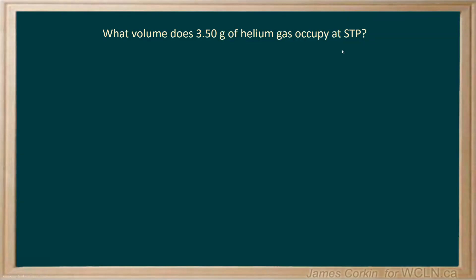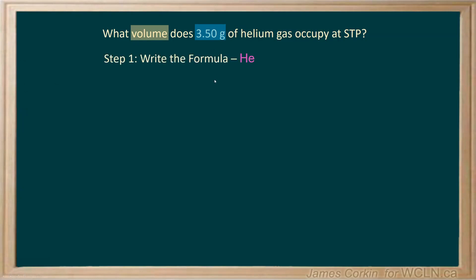In this example, we are asked what volume does 3.50 grams of helium gas occupy at STP, which is standard temperature and pressure. First, recognize what you're asked to determine, which is volume, and the units for volume are liters. And what information do you know? You know you have 3.50 grams. So you do need to write out your formula.